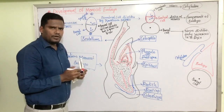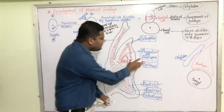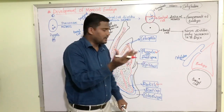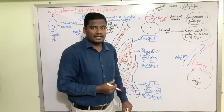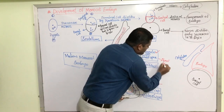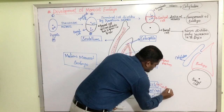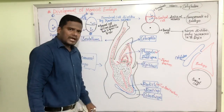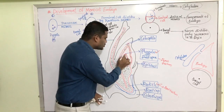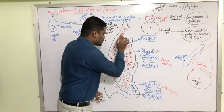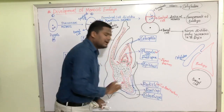In the mature monocot embryo we have two very important structures: the plumule and the radicle. The plumule gives rise to the shoot system of the plant, while the radicle is at the base and gives rise to the root system. Both the plumule and radicle are very delicate structures, and the shoot gets developed after germination of the seed.